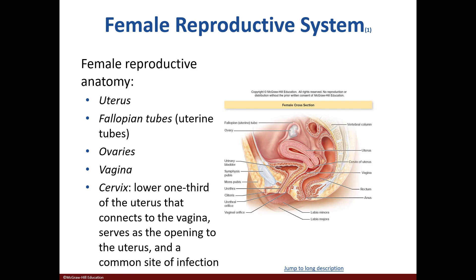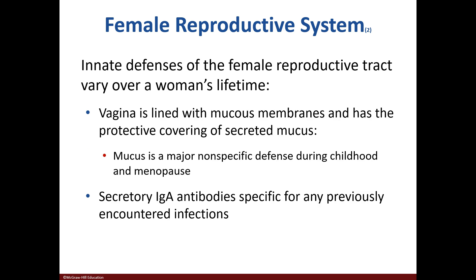The female reproductive system consists of the uterus, fallopian tubes, ovaries, vagina, and cervix. The defenses of a woman's reproductive tract change throughout life. The vagina consists of a mucous membrane which contains mucus, and antibodies are also present.